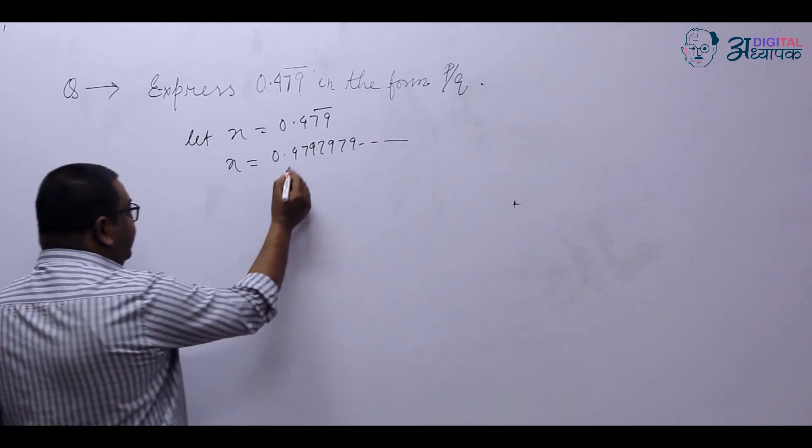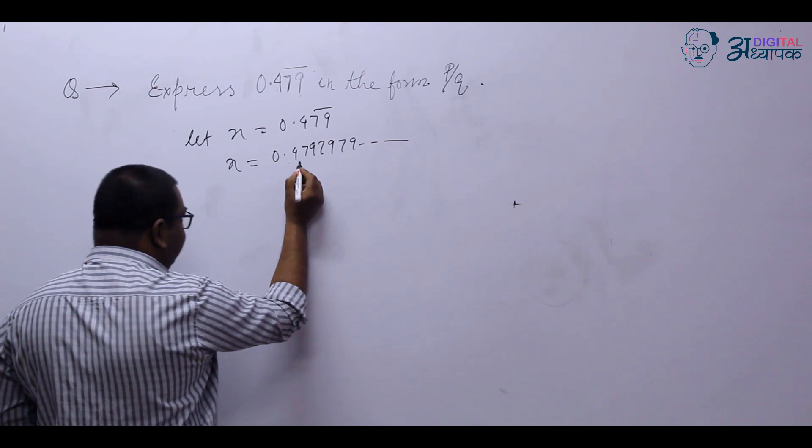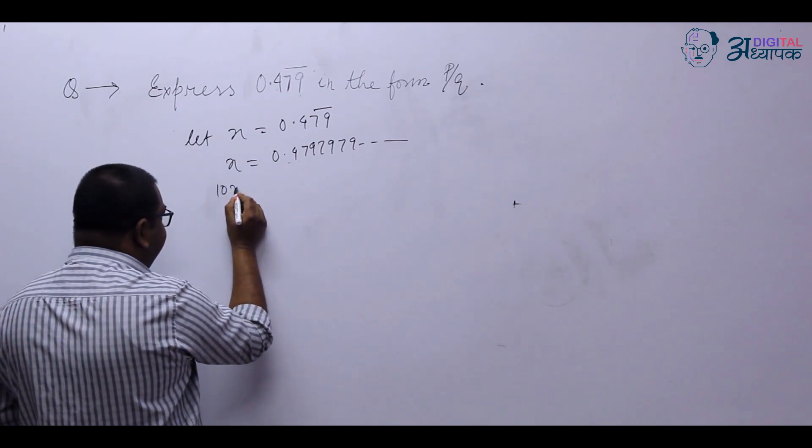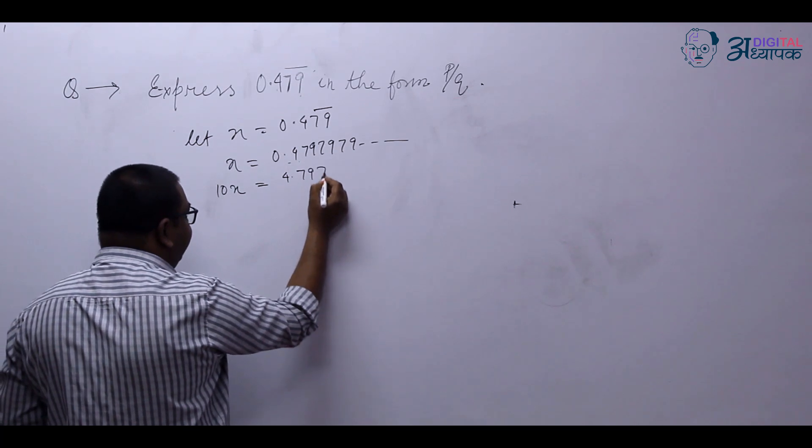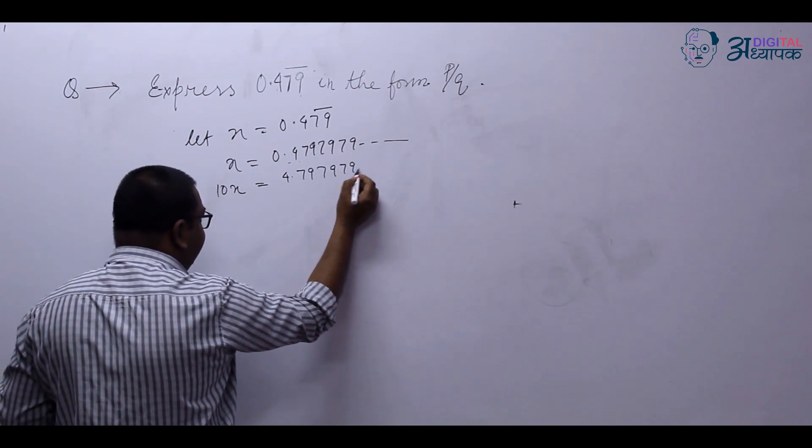So we have to shift the decimal place first by one place. So we will multiply it by 10. So it becomes 10x is equal to 4.797979 and so on.